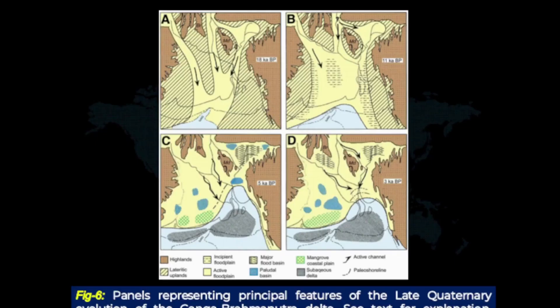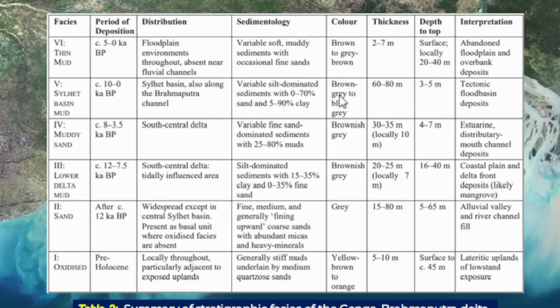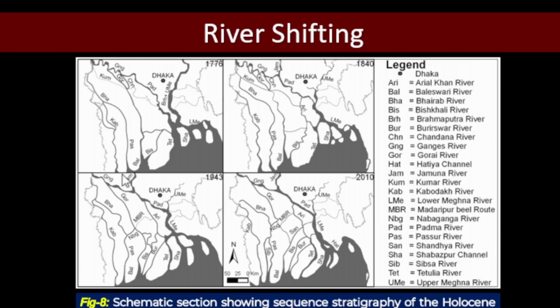This figure shows the principal features of the late Quaternary evolution of the Bengal Delta. The lateritic uplands were gradually covered with active floodplains during this time. This figure also explains the sequence stratigraphy of Holocene deposits in the Bengal Delta: the lowstand deposits were the early Holocene deposits, then the transgressive deposits, and finally the highstand deposits. This chart summarizes all the stratigraphic phase sheets found in the Bengal Delta.